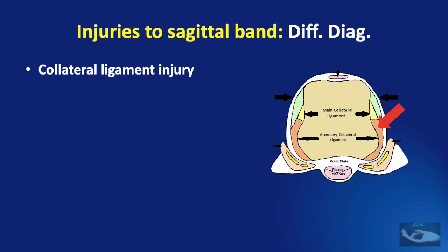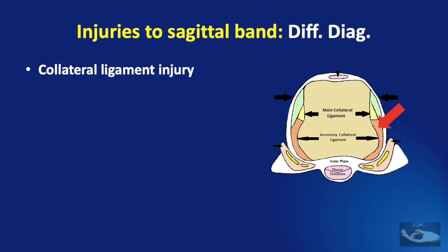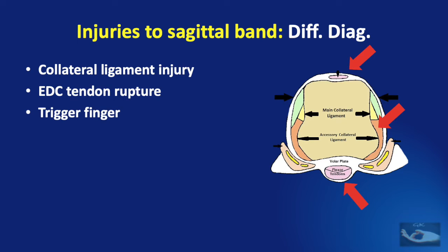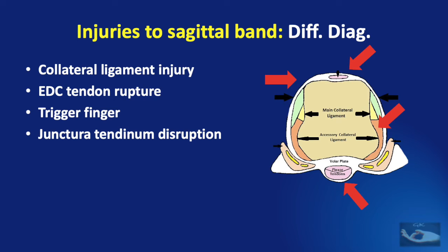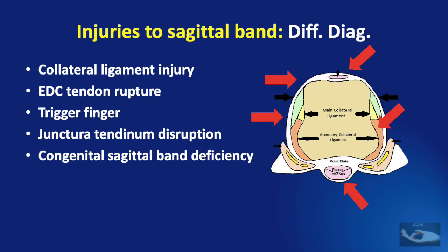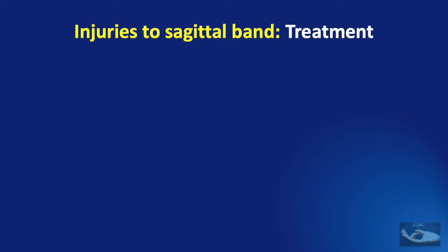Though clinical features of sagittal band injury are quite obvious, other diagnoses may mimic these findings. In collateral ligament injury of the metacarpophalangeal joint, similar symptoms may be seen. In a rare case of rupture of the extensor digitorum communis tendon, similar symptoms may also appear. A trigger finger may give the same appearance of tendon snapping. Disruption or injury to the juncturae tendinum can also cause slight ulnar deviation of the finger at the metacarpophalangeal joint. Congenital sagittal band deficiency and metacarpophalangeal joint arthritis are other differential diagnoses.